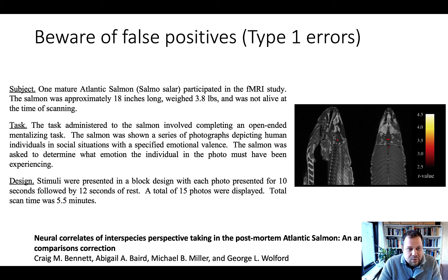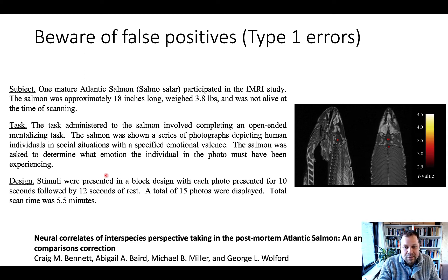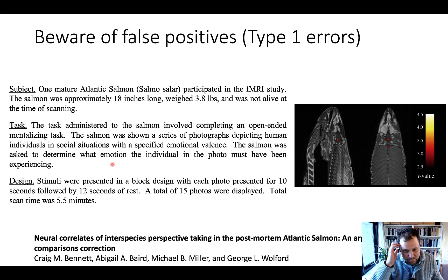The subject of the study was a mature Atlantic salmon, and he was not alive at the time of scanning — so this is basically a dead salmon. The authors gave the salmon a task: they put the salmon in the scanner and then showed different types of photographs depicting human individuals in social situations with a specific emotional valence. The salmon was asked to determine what emotion the individual in the photo must have been experiencing — kind of like a theory of mind or empathy task.